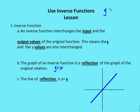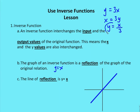So if I had an equation y is equal to 3x, I simply interchange the x and the y values. You get x is equal to 3y, and typically I'm going to solve in terms of y. So I get y is equal to x divided by 3 as my inverse function of the function y is equal to 3x.